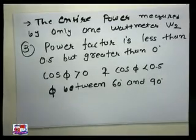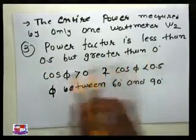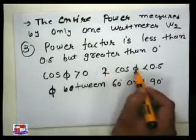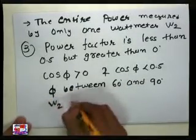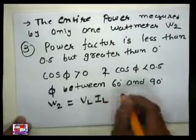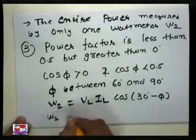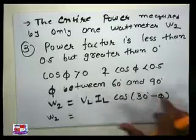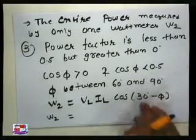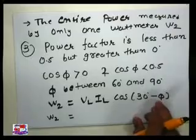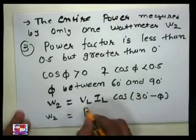Because our third case is power factor less than 0.5 but greater than 0, cos φ is between 0 and 0.5, so angle φ is between 60° and 90°. For W2 = VL into IL into cos(30° − φ): putting φ = 60° gives cos(−30°), which is a positive value. Putting φ = 90° gives cos(−60°), still a positive value. So W2 always gives a positive value.